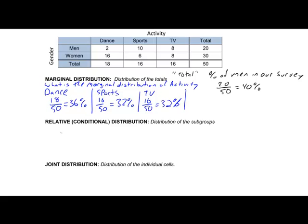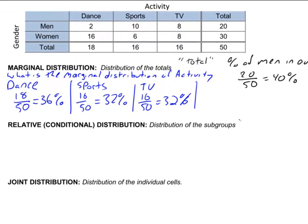Next what I want to talk about is relative or conditional distributions. Relative and conditional distributions are distributions that are based on one variable. A lot of times the words are going to be given that or out of. So a question might be something like out of all the men, how many prefer sports?